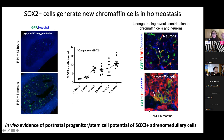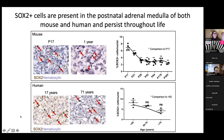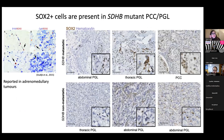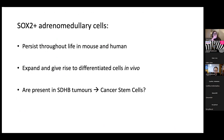This is the first solid in vivo evidence of the stem cell potential of SOX2 cells in the adrenal medulla. We confirmed they are present not only in mouse but also in human, and they persist throughout life in both species. We also confirmed in the lab that SOX2 cells are present in both metastatic and non-metastatic SDHB tumors. Given that these cells persist throughout life, expand and give rise to differentiated cells in vivo, and appear in SDHB tumors, they are the best candidate to be a cancer stem cell.